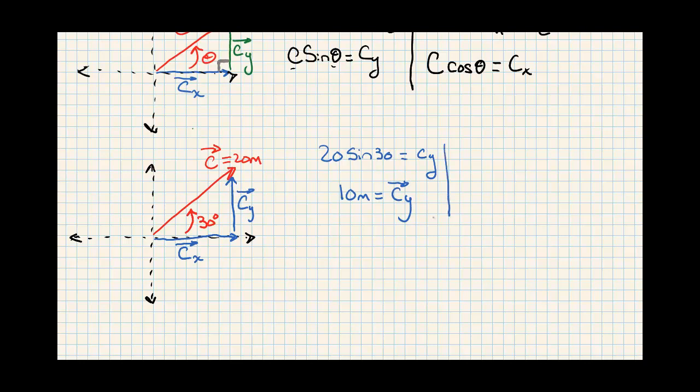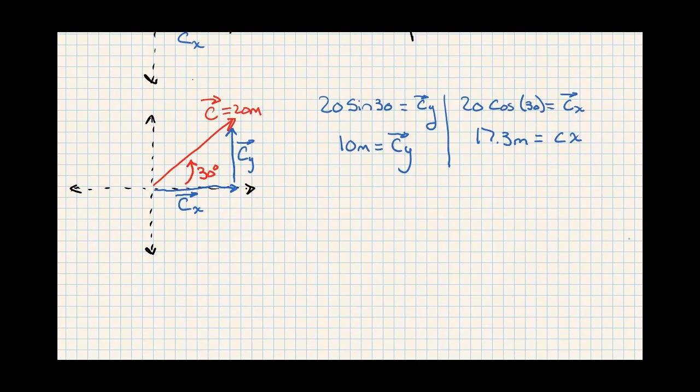By the same token, we can go ahead and get the horizontal portion. 20 cosine of 30 is Cx. Try to keep my arrows on things. So that brings us to 17.3 meters equals Cx. What that means is that we have this C vector up, C equals 20, lifted at 30. That is equivalent to having these two separate vectors both acting.